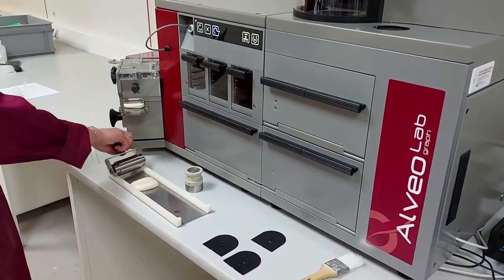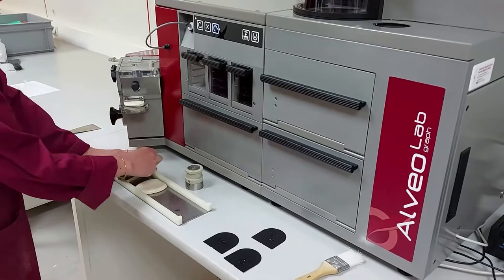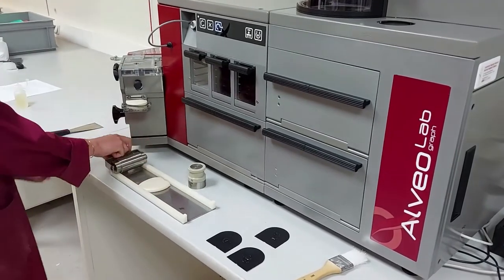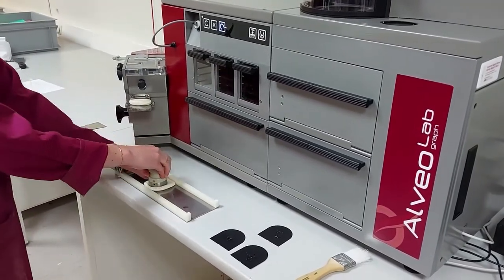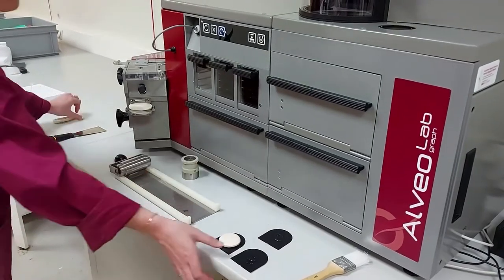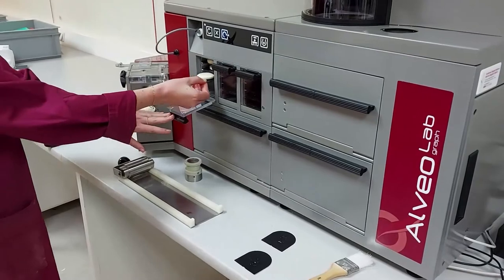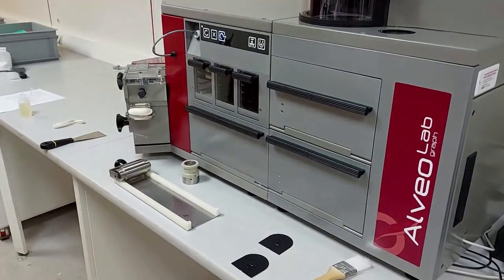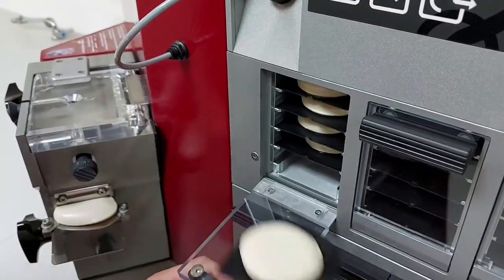Sheet the dough pieces using the roller 12 times. Using the cutter, cut a test piece and remove any surplus dough. Place the obtained patty on a resting plate. Transfer the dough piece to the resting chamber for 20 minutes. Repeat this operation with 5 dough pieces in total.